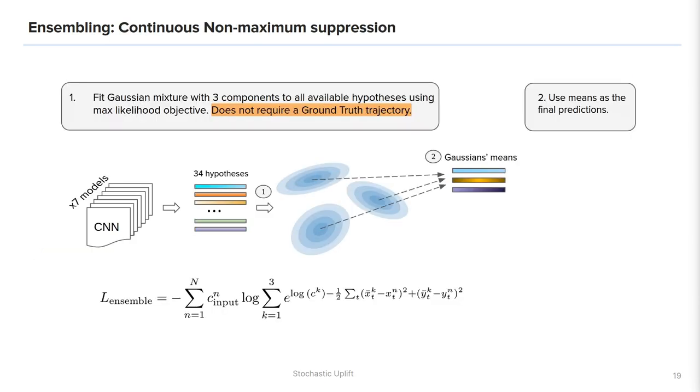To combat these shortcomings, we consider an extension of the non-maximum suppression to the continuous case, and this naturally leads us to the Gaussian mixture model. We fit a mixture of three Gaussians to the pool of the hypothesis and use the obtained means of the Gaussians as the final predictions. The optimized objective is very similar to the traditional Gaussian mixture model objective. It is log-likelihood of the input hypothesis. The only modification to the original Gaussian mixture model objective is that every hypothesis is weighted according to its confidence. This approach works pretty well and produces solution better than any single model in the ensemble, but it can easily get stuck in local optima and is very sensitive to the initialization.